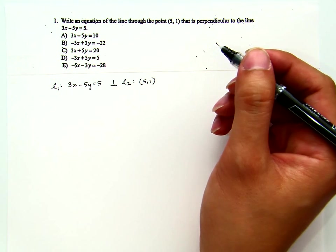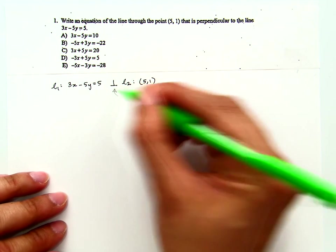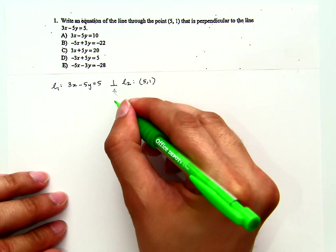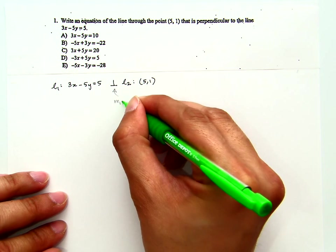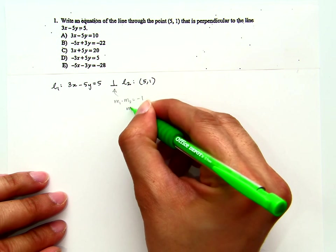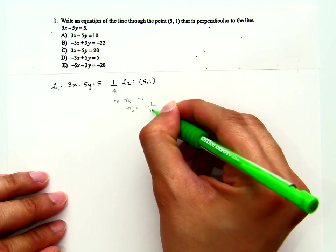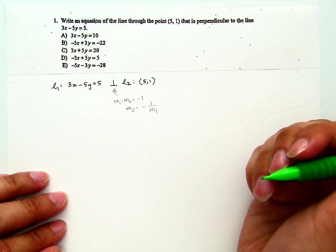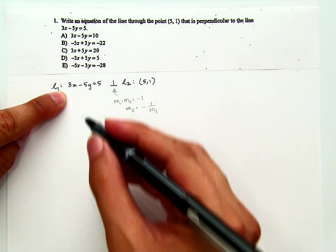Now because it's perpendicular, then therefore the slope of line 1 times the slope of line 2 equals negative 1. Or put it another way, the slope of line 2 is negative reciprocal of the slope of line 1. Now so what I will do first, I will find the slope from line 1.